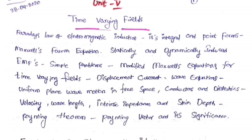Further topics include plane wave motion, free space wave equations, how electromagnetic waves can travel in a conductor, wavelength, intrinsic impedance, skin depth, and the Poynting theorem and Poynting vector with its significance. That is the complete syllabus for the time varying fields unit.